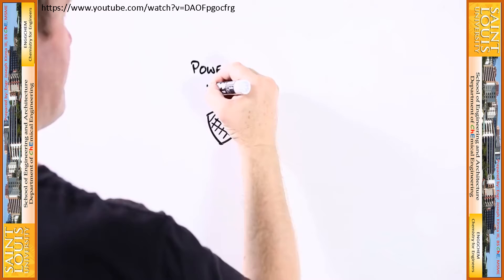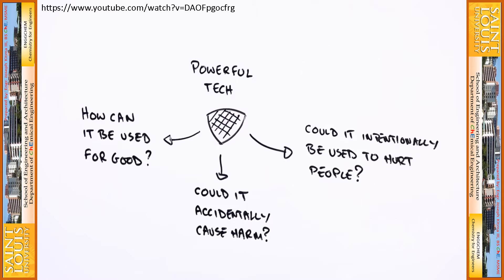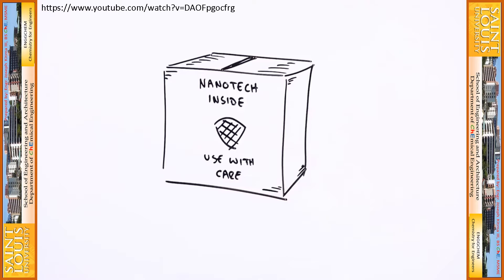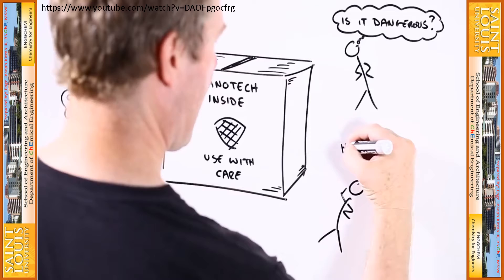Because nanotechnology is so powerful, we need to be careful how we use it — just in case we end up causing more problems than we solve. Scientists and others are working hard to develop and use nanotechnology responsibly. At the end of the day, it's up to us to decide how much we want nanotechnology-enabled products and what we're willing to put up with to get them.